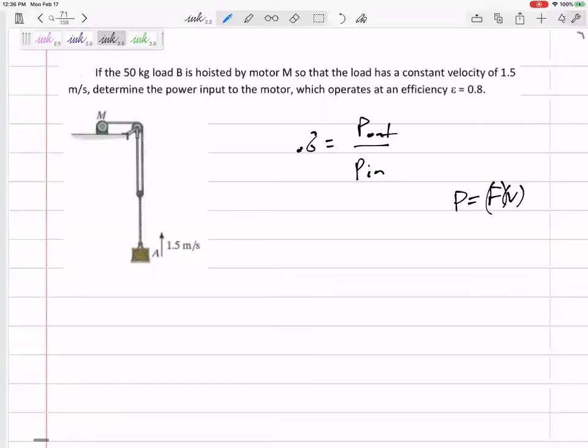So if this has an efficiency of 0.8 and I want to know the power in, then if we take that equation, if I knew the power out, then I'd give you the power in, right? The power out is what's actually happening.